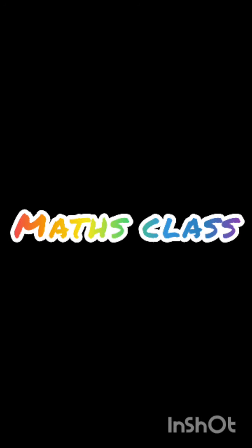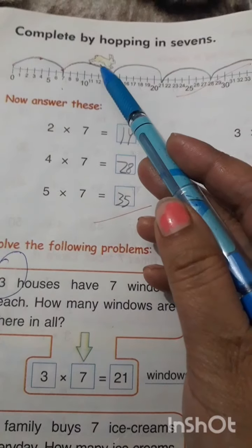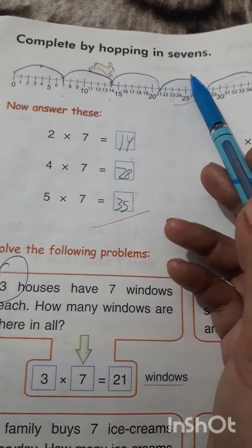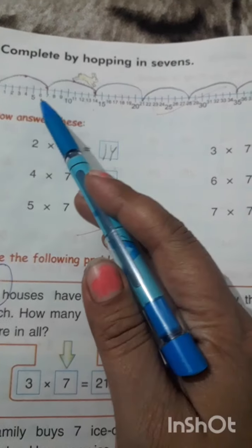Good morning students. Welcome to your maths class. Complete by hopping in 7. Rabbit has to jump on 7.